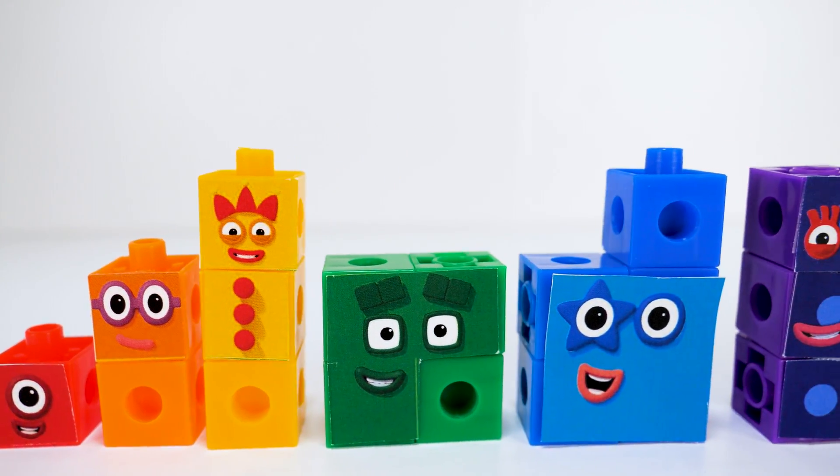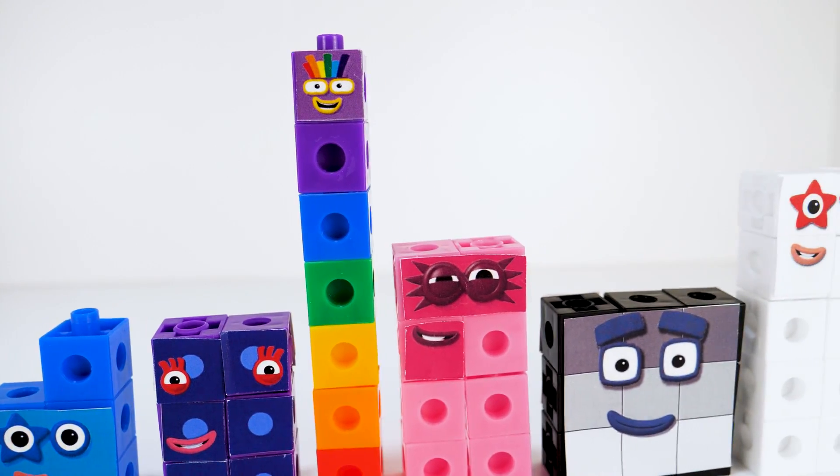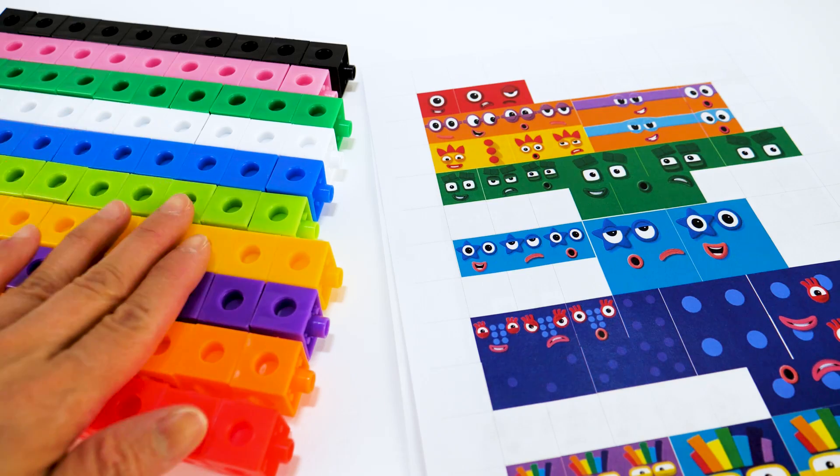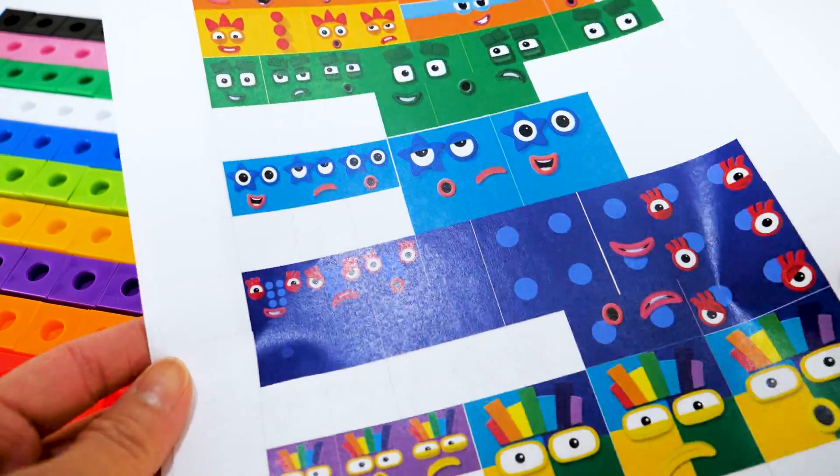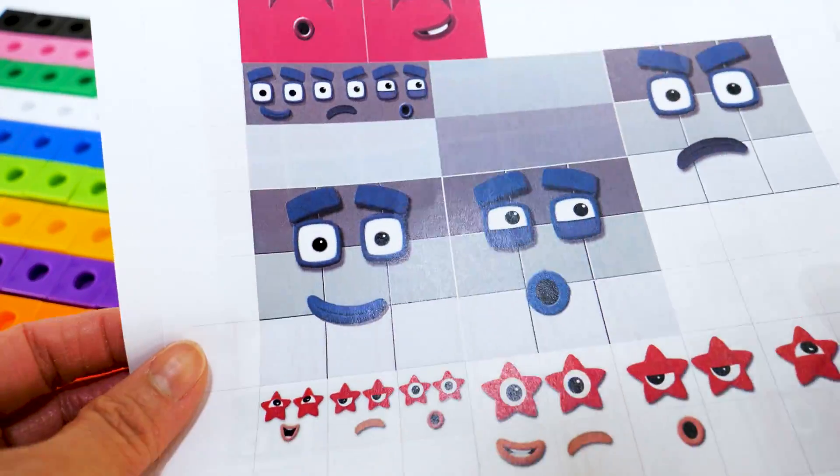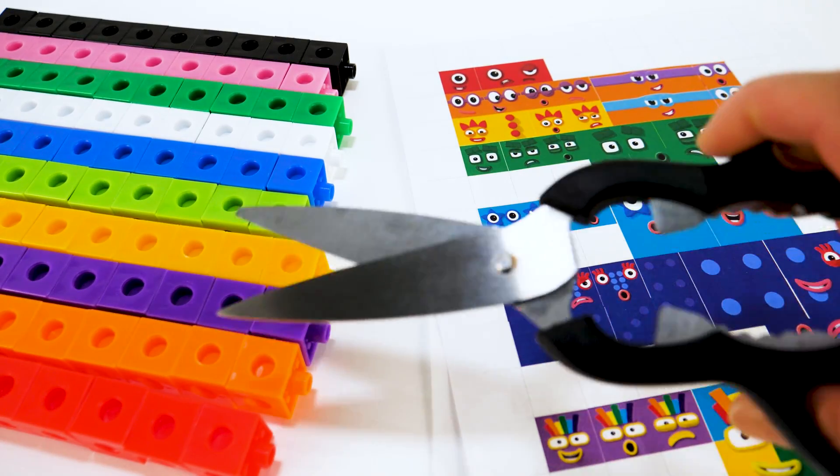Hello guys! Today we are going to show you how to build number blocks 1 to 10 using snap cubes. You will need some snap cubes, sticker sheets or wire sheets with number blocks printed on them, and a pair of scissors.